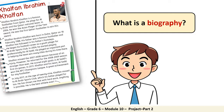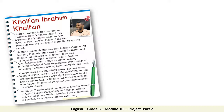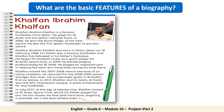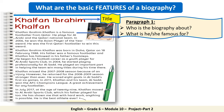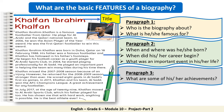Very good! A biography is a piece of writing that tells true facts and information about someone's life, and it's written by another person. Now let's recall the basic features of a biography: start by writing the title, then move to paragraph 1 and answer the following questions, next move to paragraph 2, after that paragraph 3, and finally paragraph 4.